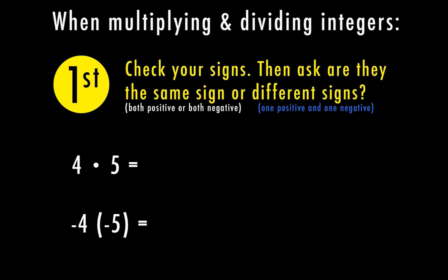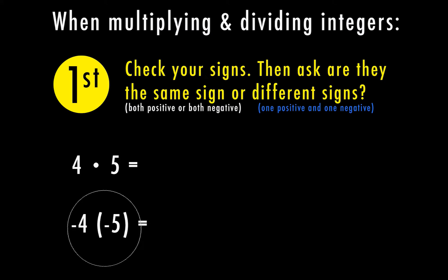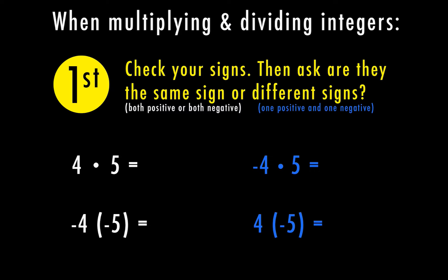The same sign means that both numbers in our problem are positive, or both numbers are negative. Different signs means that one is positive and one is negative.